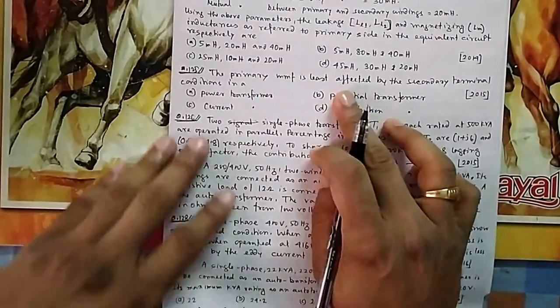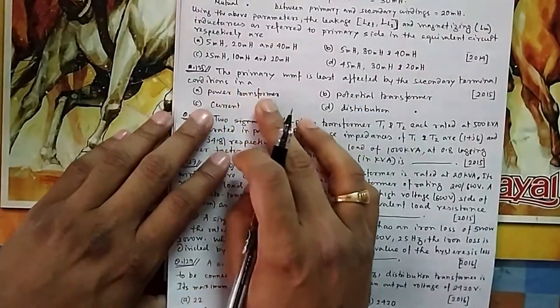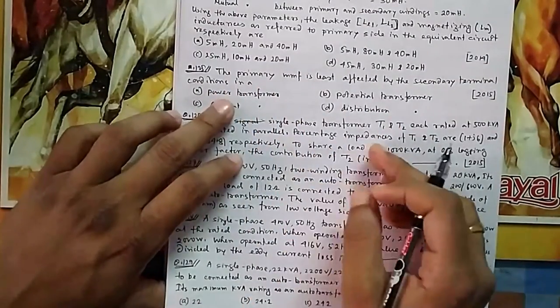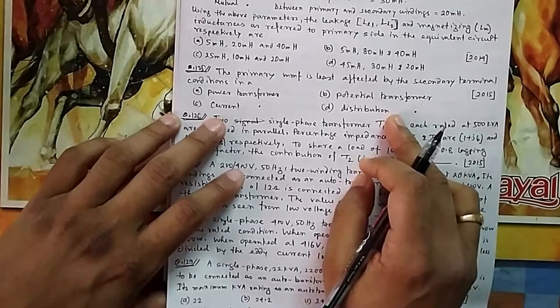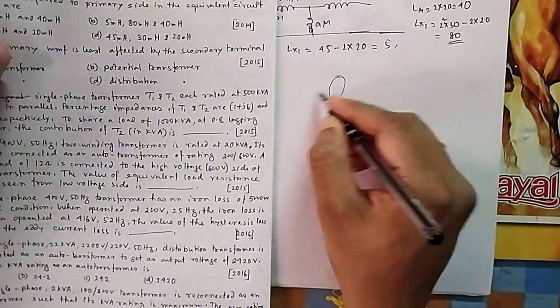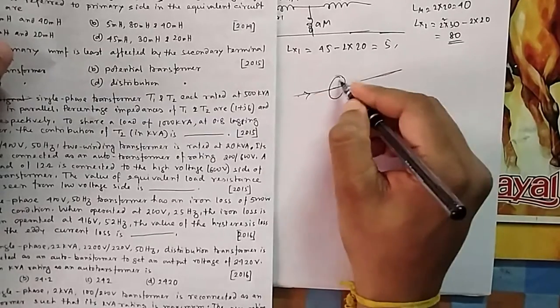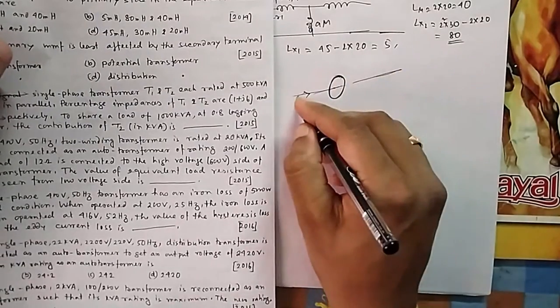Next, question 125: The primary MMF is least affected by the secondary terminal condition in - a power transformer? Power transformer - it will be obviously not, because it is effective. It is always phi 2 minus phi 1. Distribution transformer is also there, potential transformer and current transformer. Now you see your CT - CT is just like this. It is a primary has a single turn and this is the primary current, and it is the CT through which you are passing.